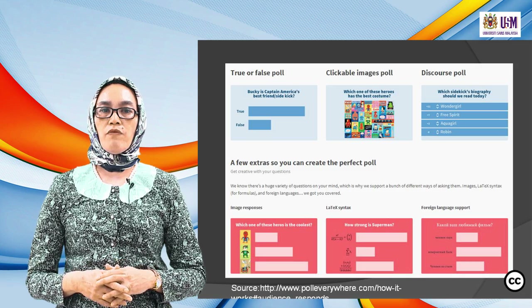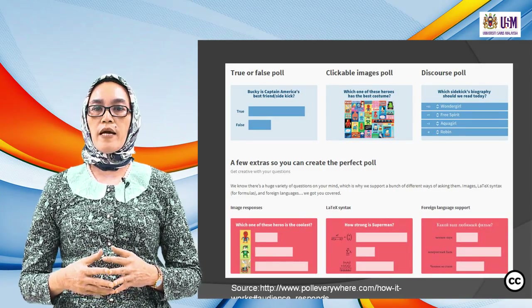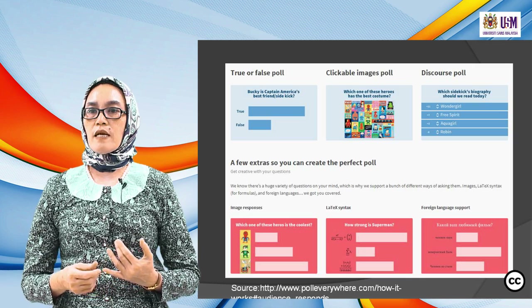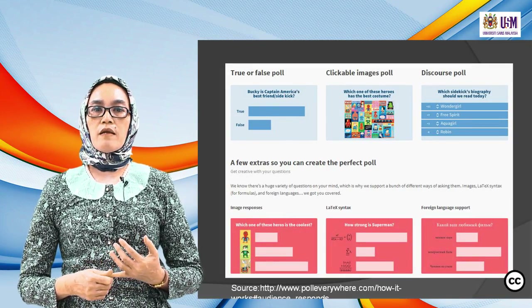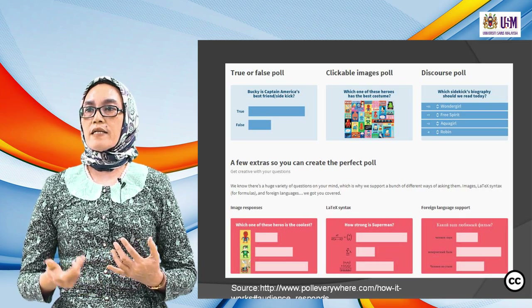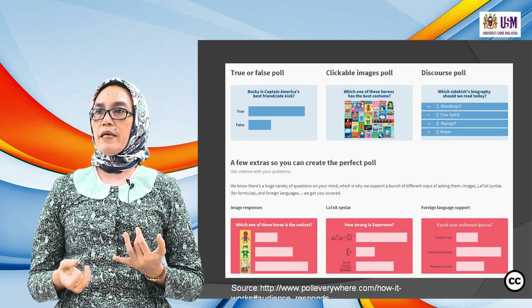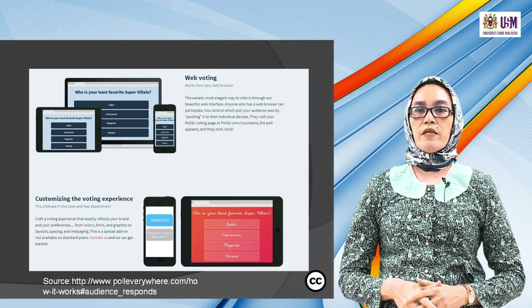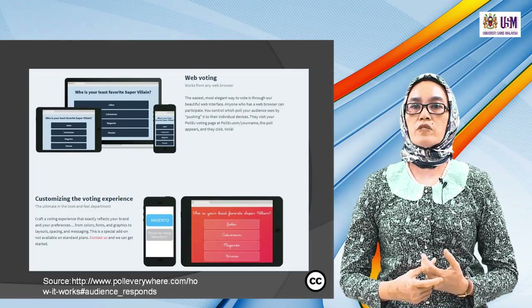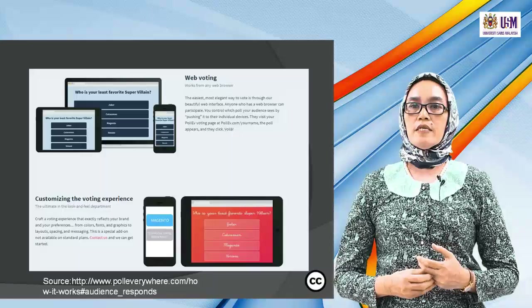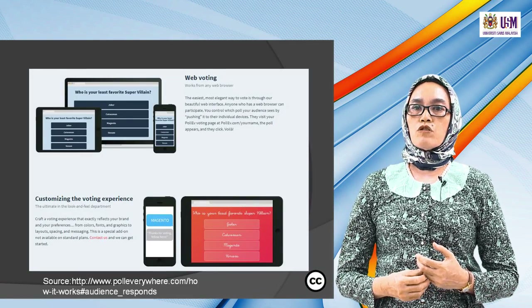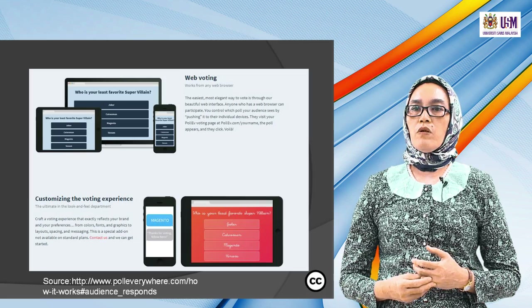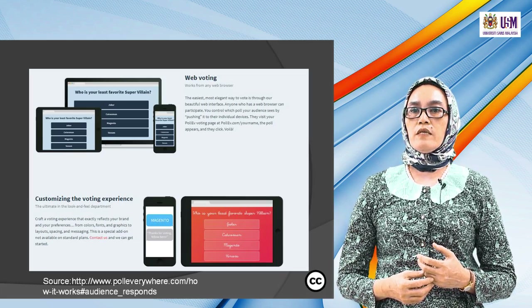Get creative with your questions. There are huge varieties of questions — questions, images, formulas, foreign language, or mathematical questions. In Poll Everywhere you can also use your mobile phone and do web voting. It works from any web browser. Anyone who has a web browser can participate. You can control which poll your audience sees by pushing it to individual devices — they visit your Poll Everywhere voting page at polleverywhere.com/your-name.